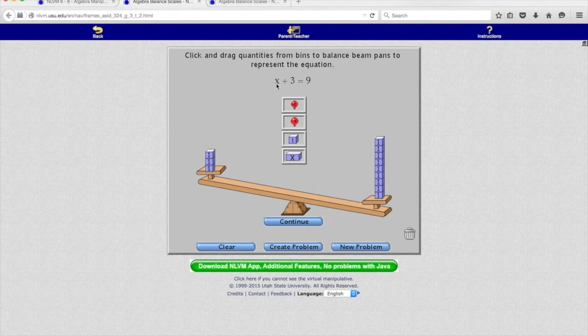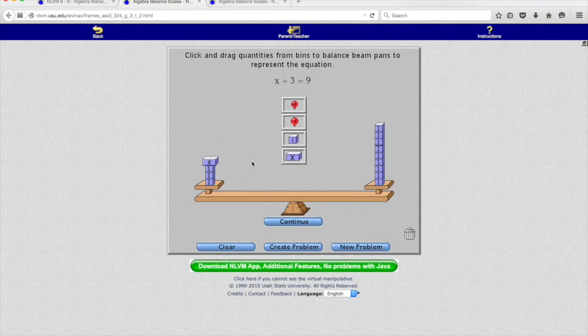But then x basically represents some mystery weight. It's a physical weight we can put over here, but we don't know how much it weighs. Now in this case, it balances things out.